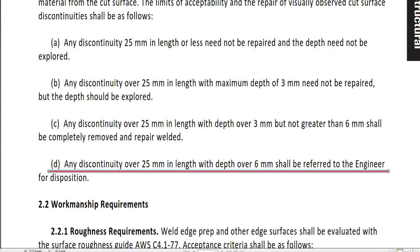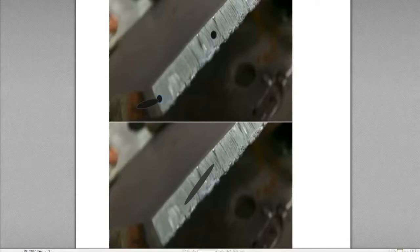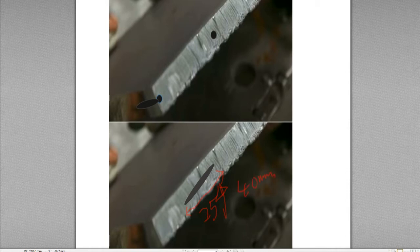Item D: any discontinuity over 25 mm in length with depth over 6 mm shall be referred to the engineer for disposition. This discontinuity should not be independently repaired — it must be reported to the engineer and you wait for their decision on what to do.